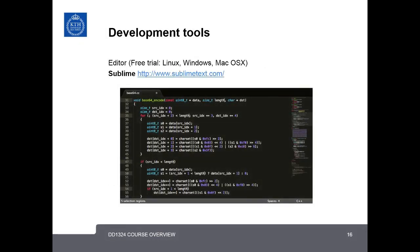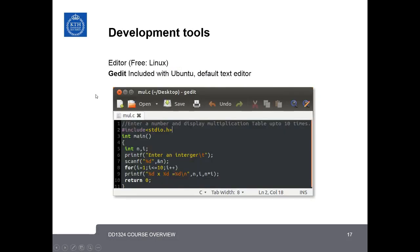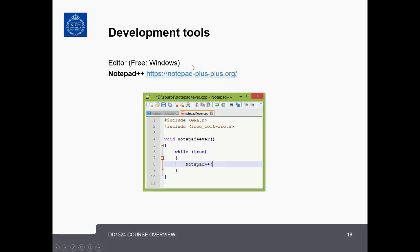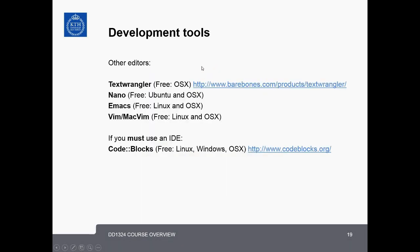One development tool needed for this course is a text editor for writing code. Sublime is a cross-platform text editor featuring syntax highlighting, split editing, and multiple selections, available with a free trial at sublimetext.com. On Linux, gedit comes free with Ubuntu and is a powerful and useful editor. For Windows, we recommend Notepad++, available at notepad-plus-plus.org. We also recommend TextWrangler for Mac OS X. Nano, Emacs, or Vim work on Ubuntu and OS X. If you must use an IDE, we recommend CodeBlocks, a cross-platform IDE available at www.codeblocks.org.